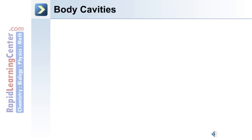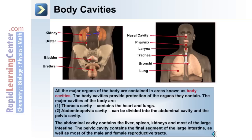The body contains what are described as body cavities. The body cavities provide protection for the organs they contain as well as separation. The major cavities are: the thoracic cavity, which contains the heart and lungs; and the abdominal pelvic cavity, which can be divided into the abdominal cavity and the pelvic cavity. The abdominal cavity contains the liver, spleen, kidneys, and most of the large intestine. The pelvic cavity contains the final segment of the large intestine as well as most of the male and female reproductive tracts.